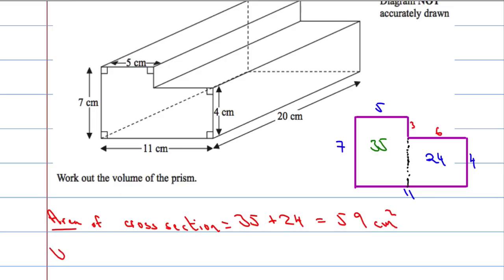Now the volume will equal the area of the cross-section, 59, multiplied by how far back it goes, which is 20. Let's see, 2 times 59 is 118, and I'm going to multiply that by 10 as well. So 1180, and that's centimeters cubed. You could use a calculator for that if you like.